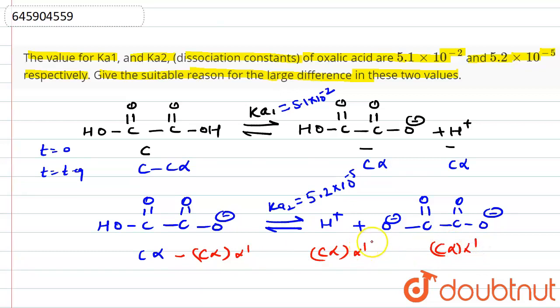Definitely here you will get the concentration of H+ and this anion lesser than in the first step. Because of that, we can see the value of Ka1 will be greater than Ka2.